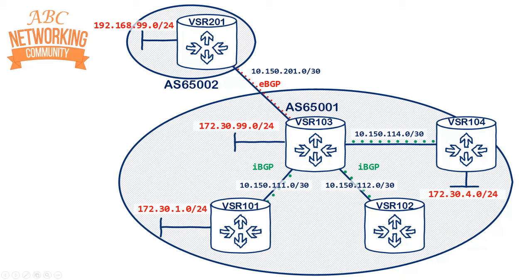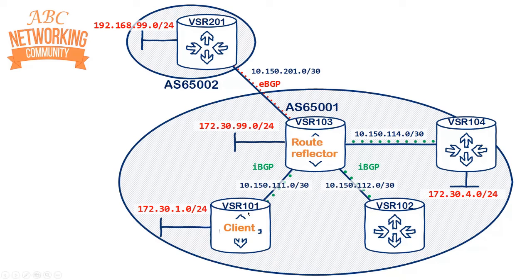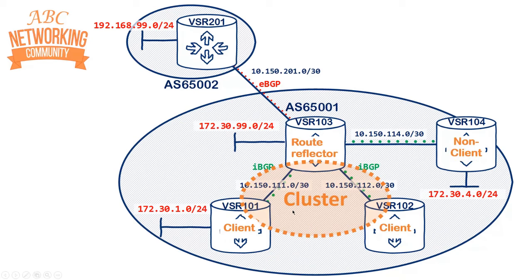Here's the demo network using VSRs on my laptop. I have four VSRs in a single AS and VSR 201 in a different AS, with eBGP between VSR 201 and VSR 103. VSR 103 will be configured as the route reflector. VSR 101 and VSR 102 will be clients, forming a cluster. VSR 104 will be a non-client. Each device except VSR 102 is injecting a local prefix into the network.